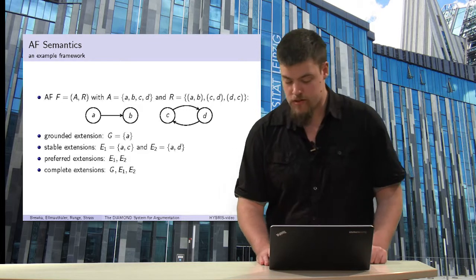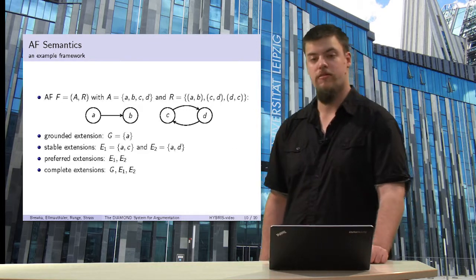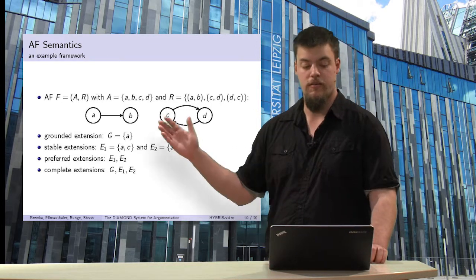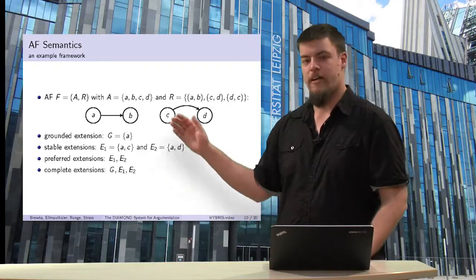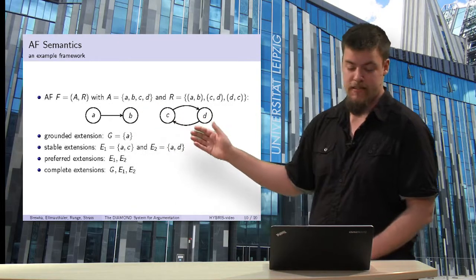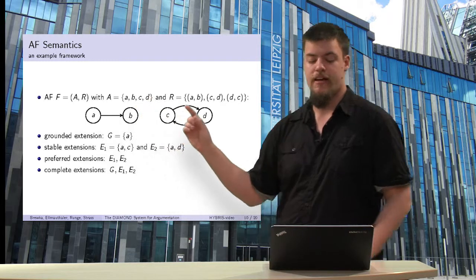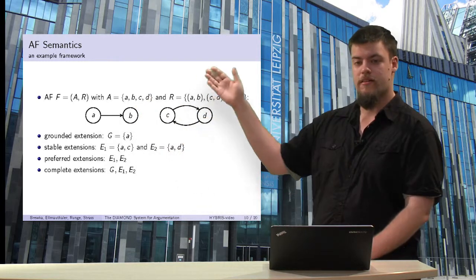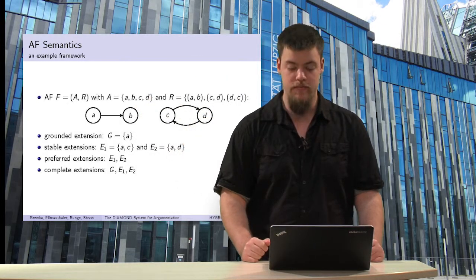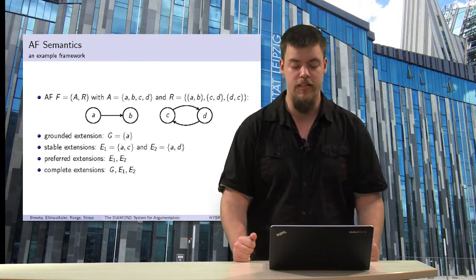I have prepared an example for a Dung's argumentation framework. We have four arguments A, B, C, and D. We see that A attacks B, C attacks D, and D attacks C, so they are mutually attacking each other. A has no attacker.